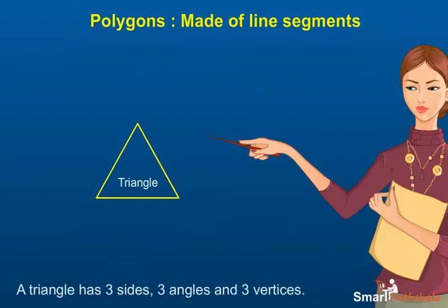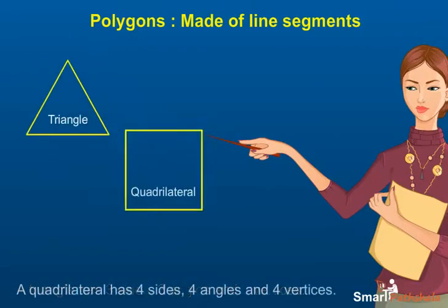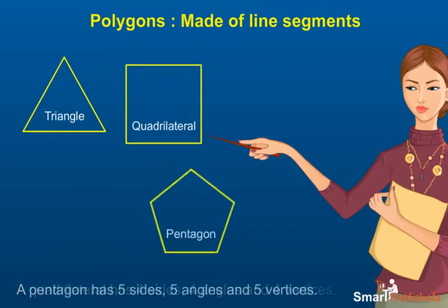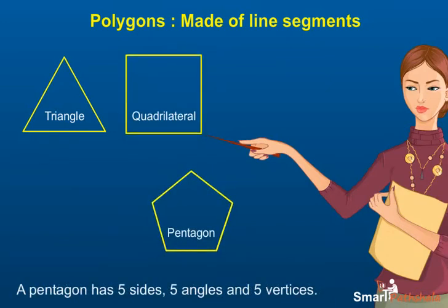A triangle has three sides, three angles, and three vertices. A quadrilateral has four sides, four angles, and four vertices. A pentagon has five sides, five angles, and five vertices.